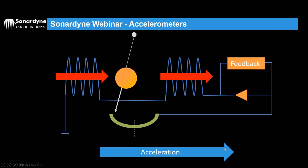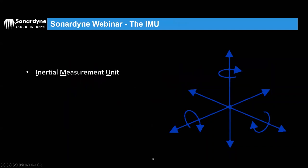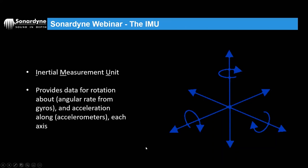Those two systems - the accelerometers and gyros - make up what's called the Inertial Measurement Unit. The cube formation of sensors combined together is an IMU - an inertial measurement unit - which provides angular rate data from the gyros and acceleration along each axis from the accelerometers. We're getting lots of angular and linear accelerations from these two systems.